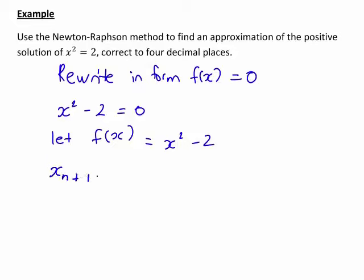The formula was x_{n+1} = x_n - f(x_n)/f'(x_n). Now, we've seen in this example f(x) is x² - 2. But clearly, we also need to find the first derivative of that.